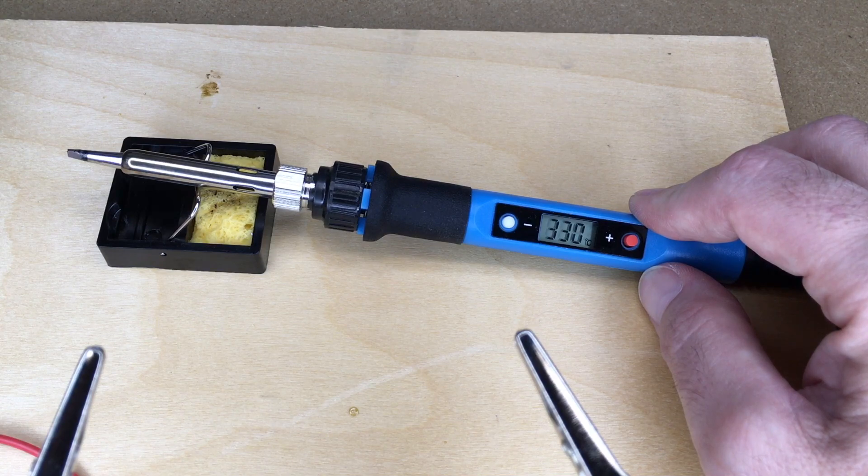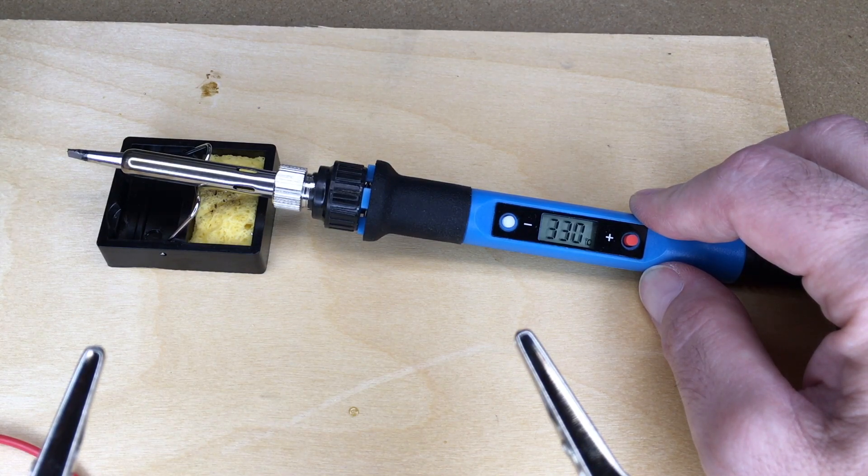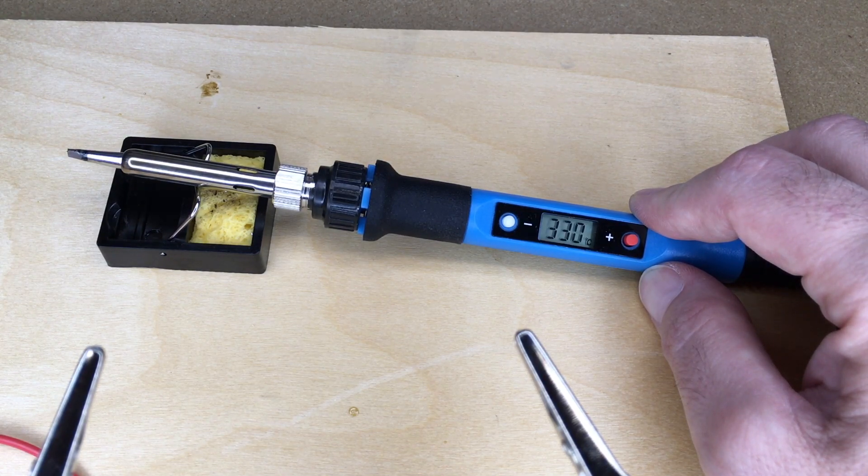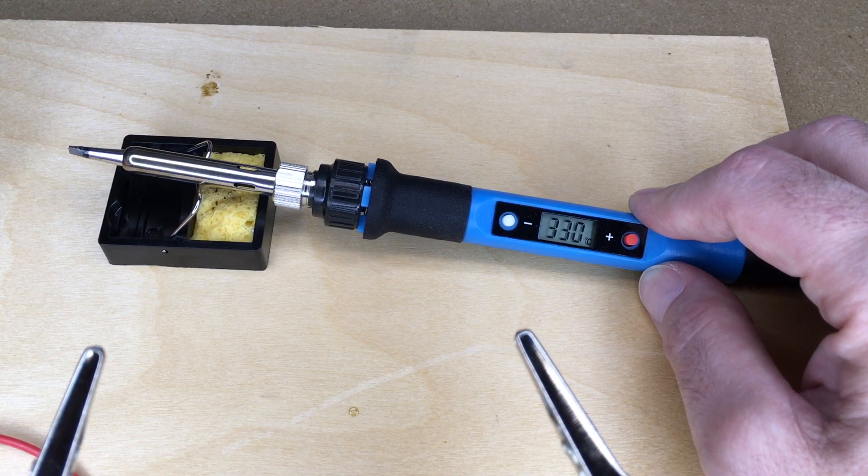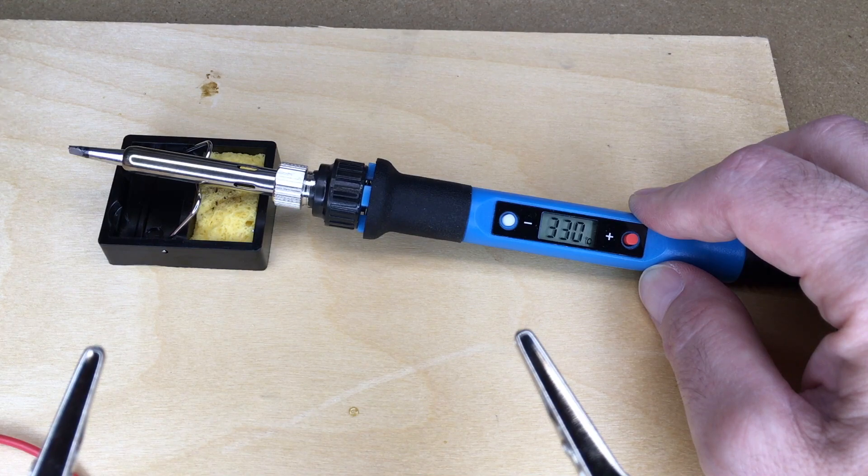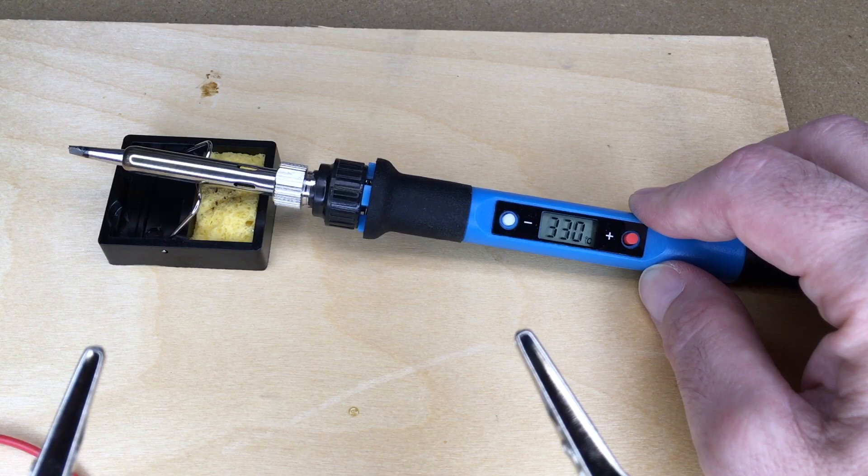I think this could be a good beginner soldering iron if you're just getting into soldering, because it does have the temperature control. It does come with the different tips. Now you do need to get solder with this. It doesn't come with solder. But generally most people want to get their own solder anyway for the application they're using. But I also think this could be good for a second soldering iron like myself, where you have some larger soldering irons or different soldering irons, where this has certain features on it that make it more useful than those.